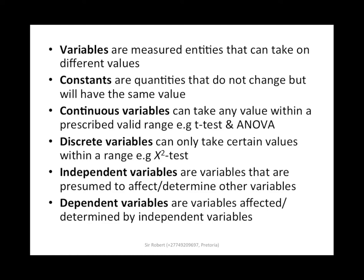It's different from a certain number which has a range. Let's say x is any number between 1 and 10, which means it's a variable — it can vary in that range. Continuous variables can take any value within a prescribed valid range; these are typical with the t-test and ANOVA. Discrete variables can only take certain values within a range, for example in a chi-square test. Independent variables are variables presumed to affect or determine other variables. Dependent variables are variables affected or determined by independent variables.